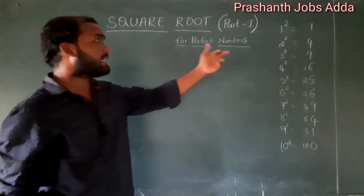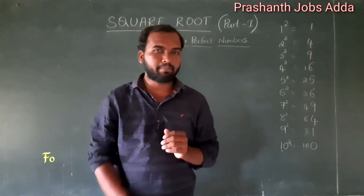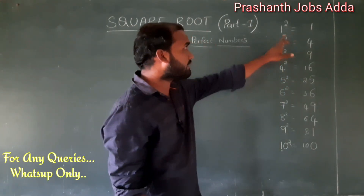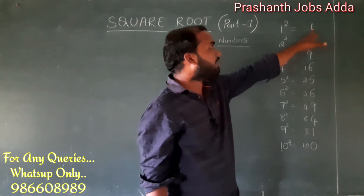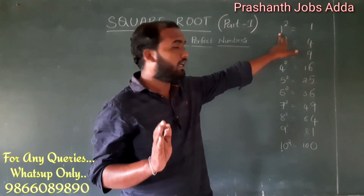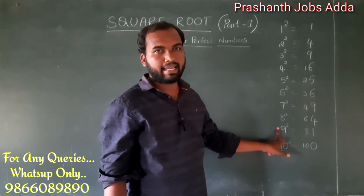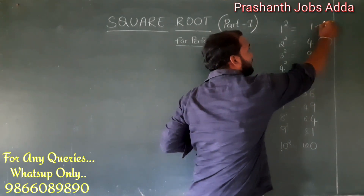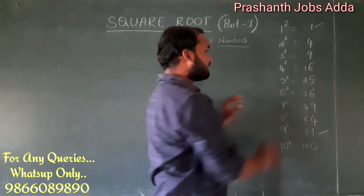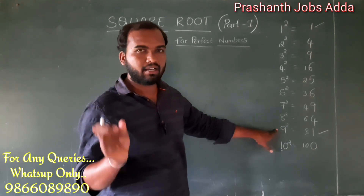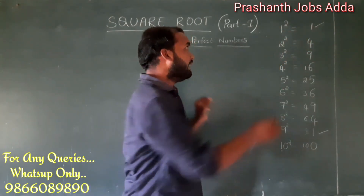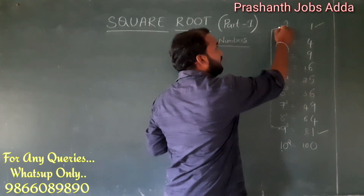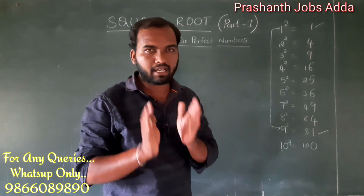So for square roots, you need to know squares from 1 to 25. For the last digit rule: if the last digit is 1, there are two possibilities — the square root ends in either 1 or 9. For example, 1 squared is 1 and 9 squared is 81, both ending in 1. Note that 1 plus 9 equals 10, a round figure number.